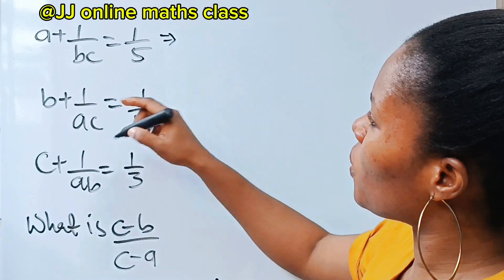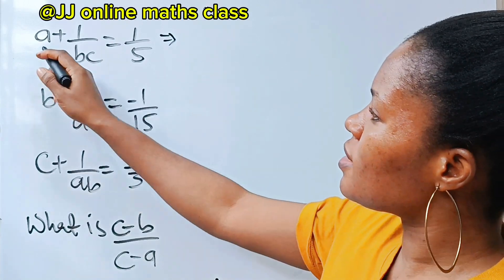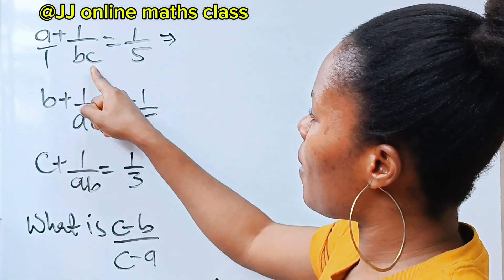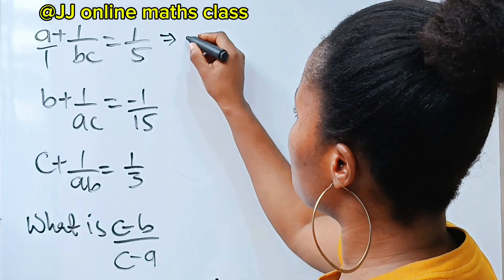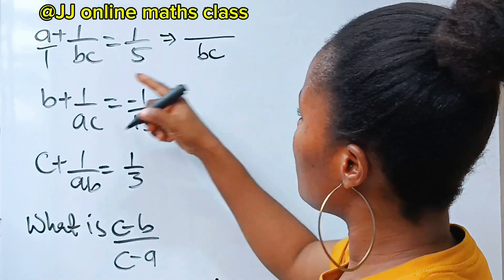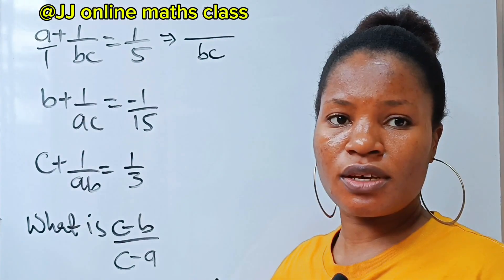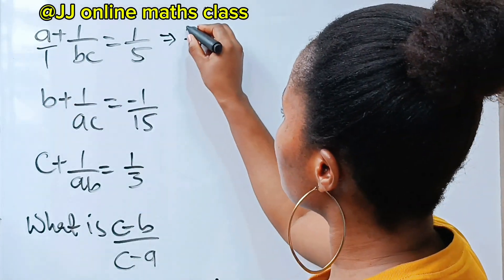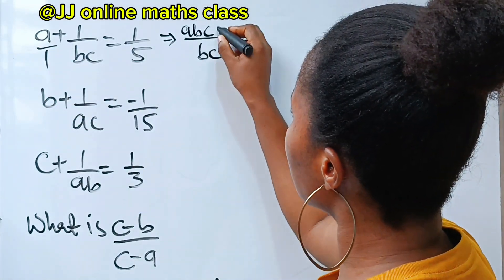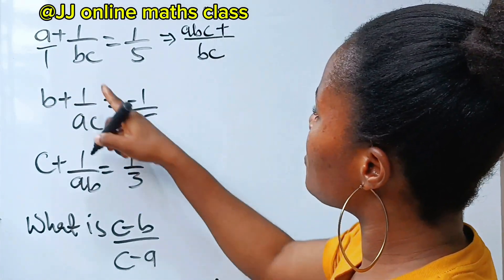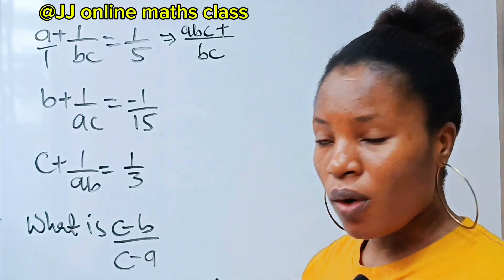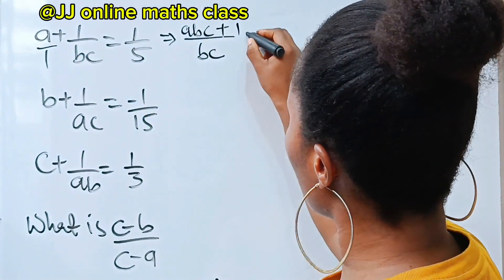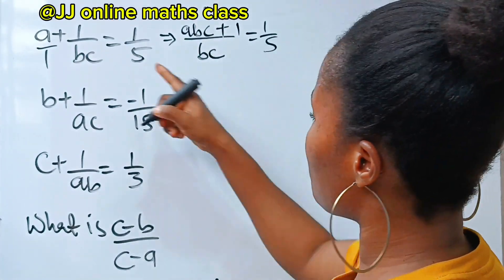Let's solve this first equation. This is the same thing as a over 1. The LCM of 1 and bc is bc. When 1 divides bc, you'll have bc. bc times a will give us abc, plus bc divides bc, you'll have 1. 1 times 1 is still 1. This is equal to 1 over 5.